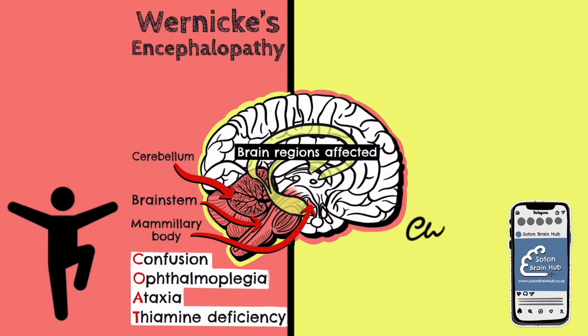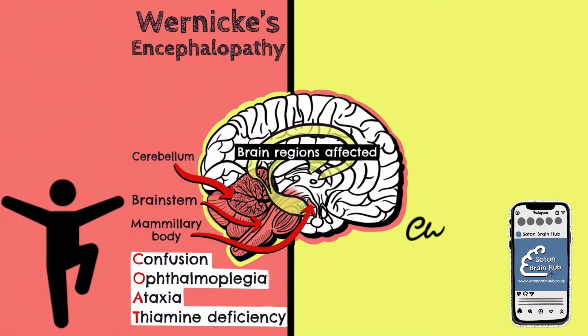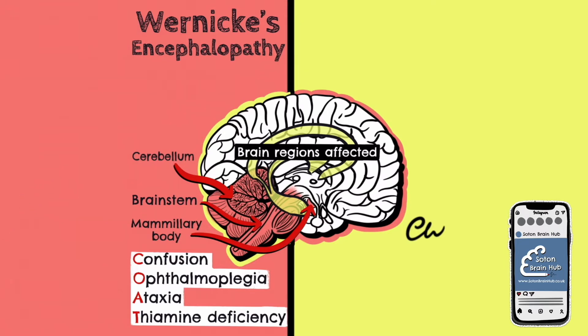Another symptom of Wernicke's encephalopathy is ataxia, which is caused by damage to the cerebellum and often mimics the symptoms of being drunk, with symptoms such as slurred speech, stumbling, falling, and incoordination.